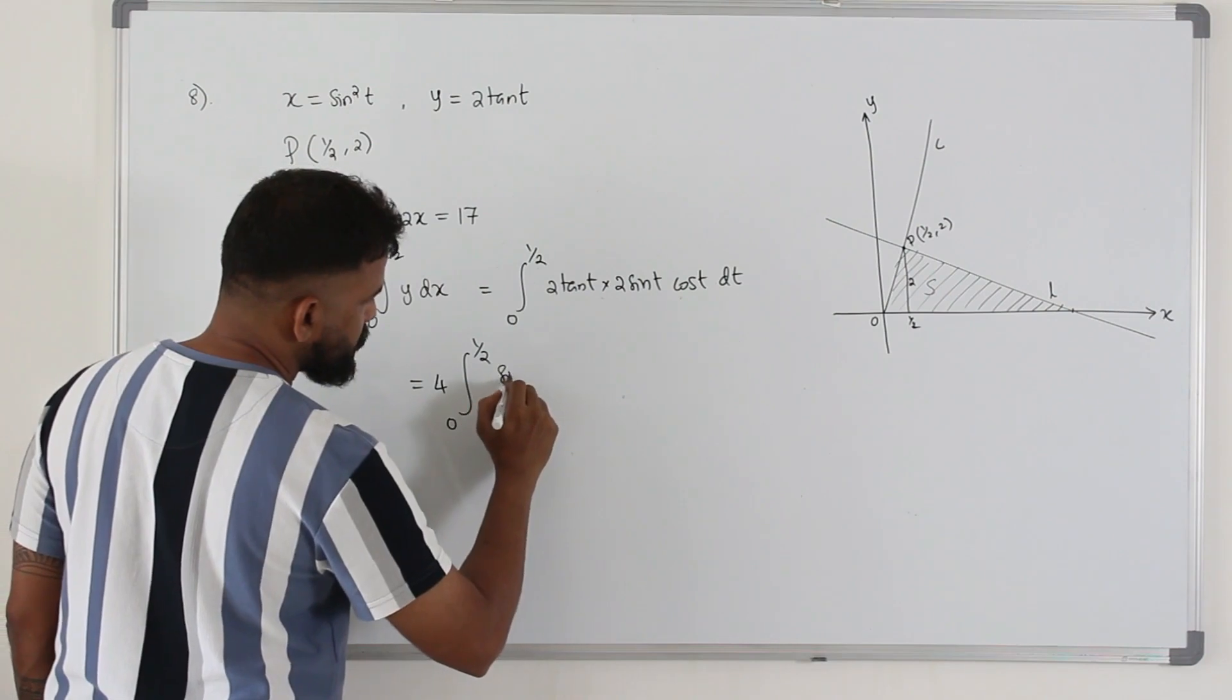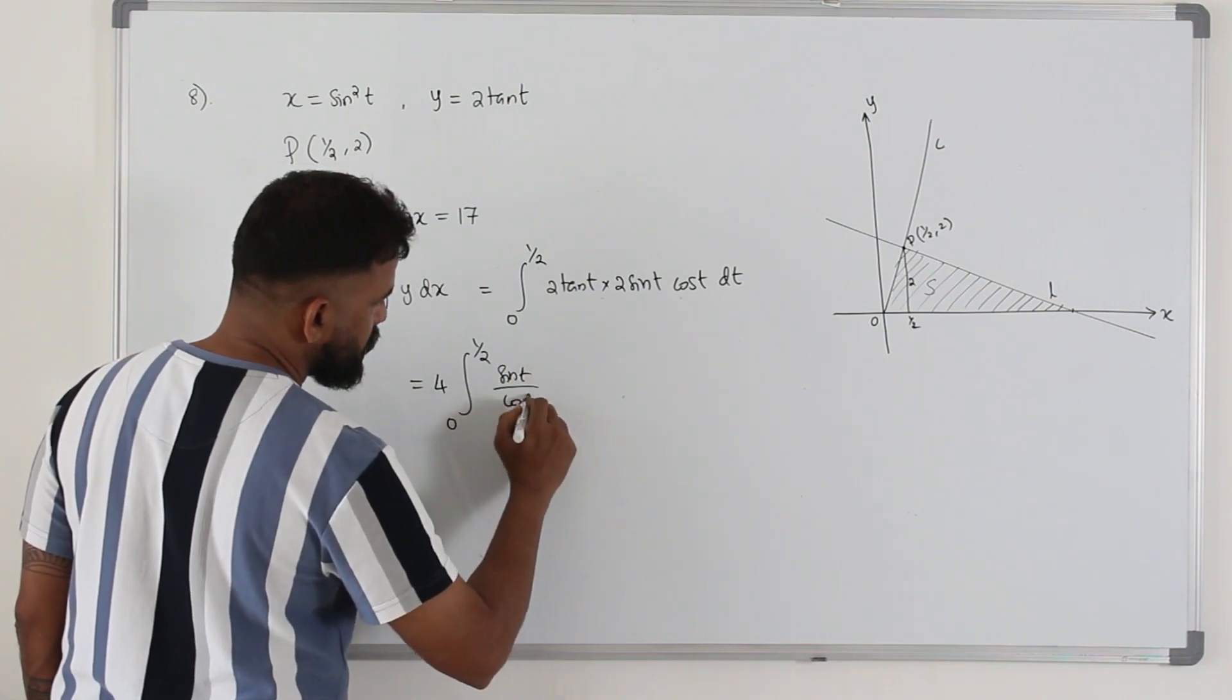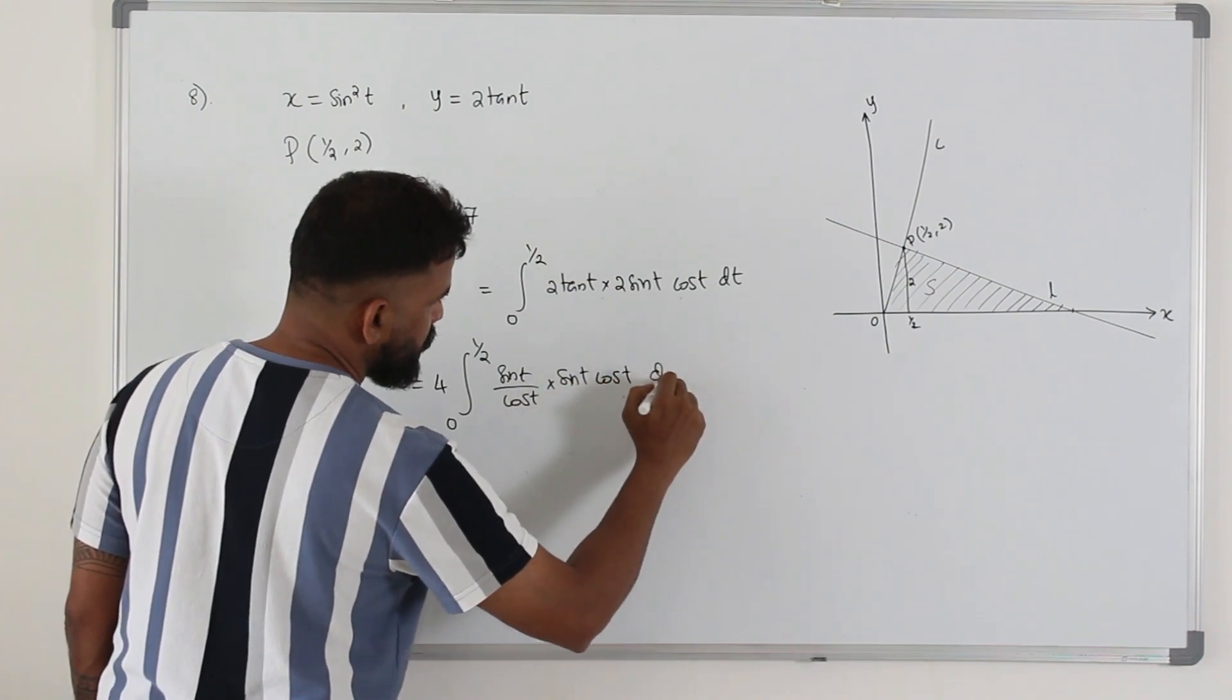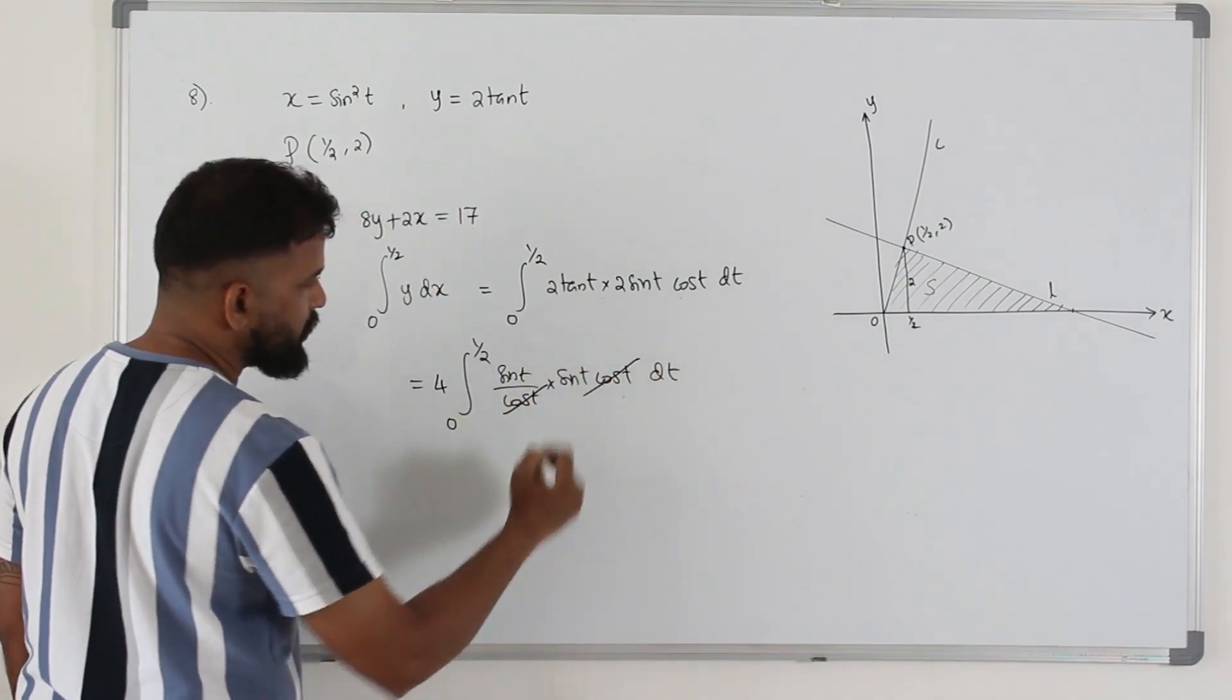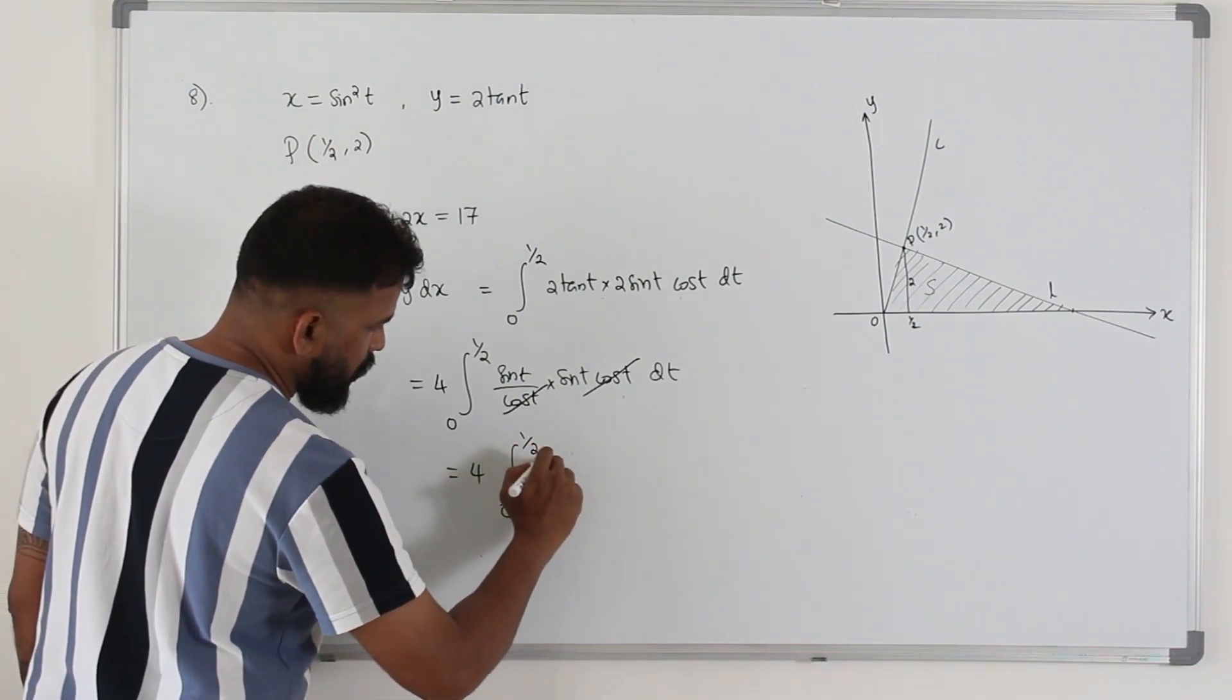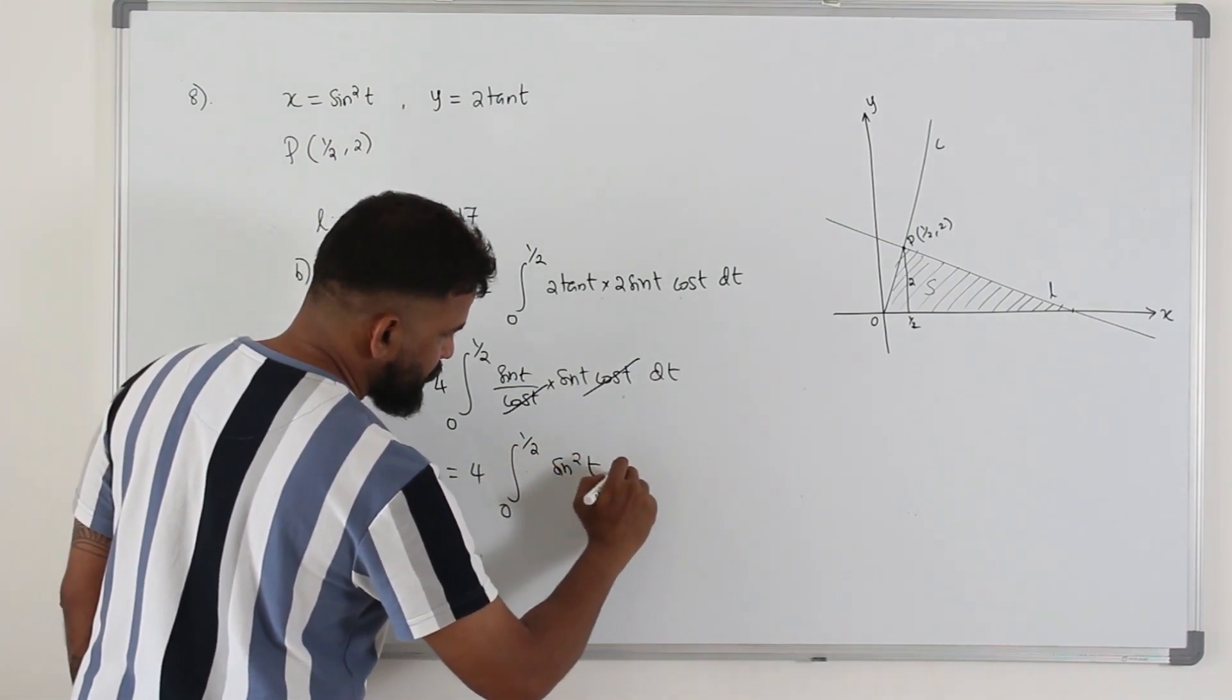Replace tan by sine over cos, and then you have sine t cos t dt. Cancel this. You get sine square t. 4 integral 0 to half sine square t dt.